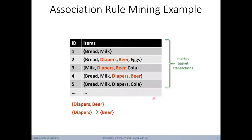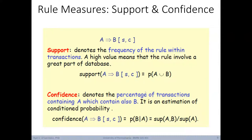Here's a simple example of association rule mining in action. Each row indicates the items a customer might have bought on one trip to the store — for example, bread and milk together, or bread, diapers, beer, and eggs. One of the patterns that you might see pop up here is the co-occurrence of diapers and beer together in purchases. Because of this frequent co-occurrence, association rule mining can use this information to create rules — in other words, if diapers are purchased, then it's likely that beer will be purchased. To understand association rule mining, let's look at two ways to evaluate rules: support and confidence.